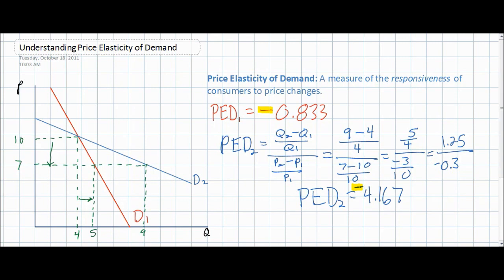Since there is always an inverse relationship between the price of a good and the quantity demanded, the PED for a good will always be negative. To simplify our analysis, we will always just take the absolute value of the price elasticity of demand. So we can say that the price elasticity of demand for good one is 0.833 and the price elasticity of demand for good two is 4.167. Since there will always be a negative sign, it is not necessary to include it — we consider only the absolute values.